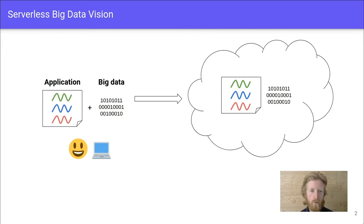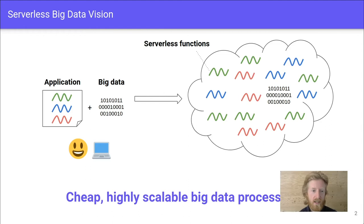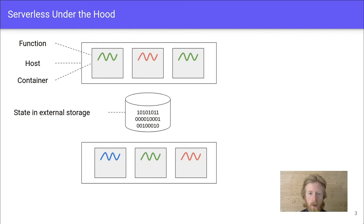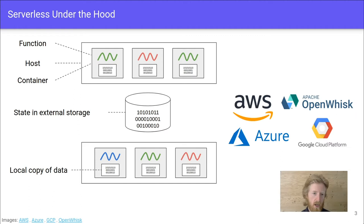We're all familiar with the serverless vision for big data, where users upload their application and data into the cloud, where it's executed as thousands of concurrent serverless functions, leading to cheap, highly scalable big data processing. Under the hood of a typical serverless platform, functions are executed across a cluster of hosts with their shared state stored in some external storage like S3. Functions are isolated from each other by a container or VM and operate on their own copy of this shared data. This architecture underpins all of the major frameworks today with a slight variation on the nature of the container or VM.